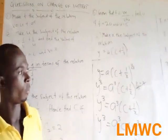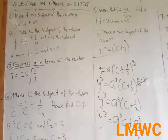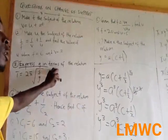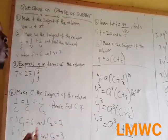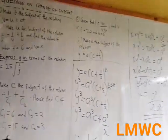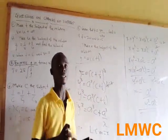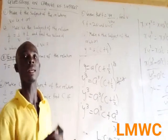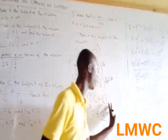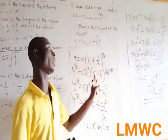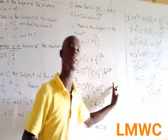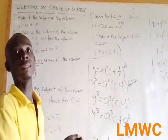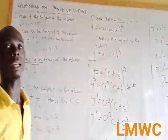I believe noble students, you have really enjoyed my lesson on change of subject. I brought out certain questions on how to solve change of subject. Whenever there is a fraction, root, and bracket, you will clear either the fraction, bracket, or root. After that, you group the letter they want you to make the subject, and when there is a need to factorize, you factorize it out. After factorizing, it is easy to make that letter the subject. Thank you and have a nice day.